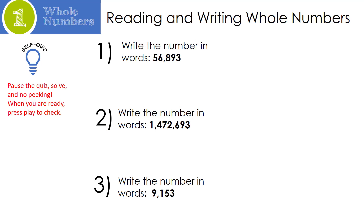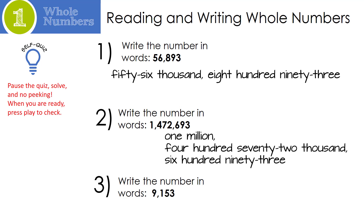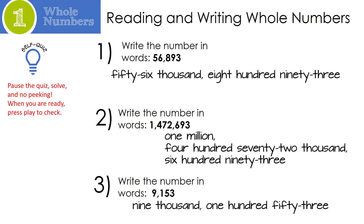Before we end the video, let's do a self-quiz to see how you're doing. Pause the quiz, solve, and no peeking. When you're ready, press play to check. Let's check these. Number one, hopefully you have fifty-six thousand, eight hundred ninety-three. Number two: one million, four hundred seventy-two thousand, six hundred ninety-three. I should have written this all in one line, but it wouldn't fit on my PowerPoint. And number three: nine thousand, one hundred fifty-three.